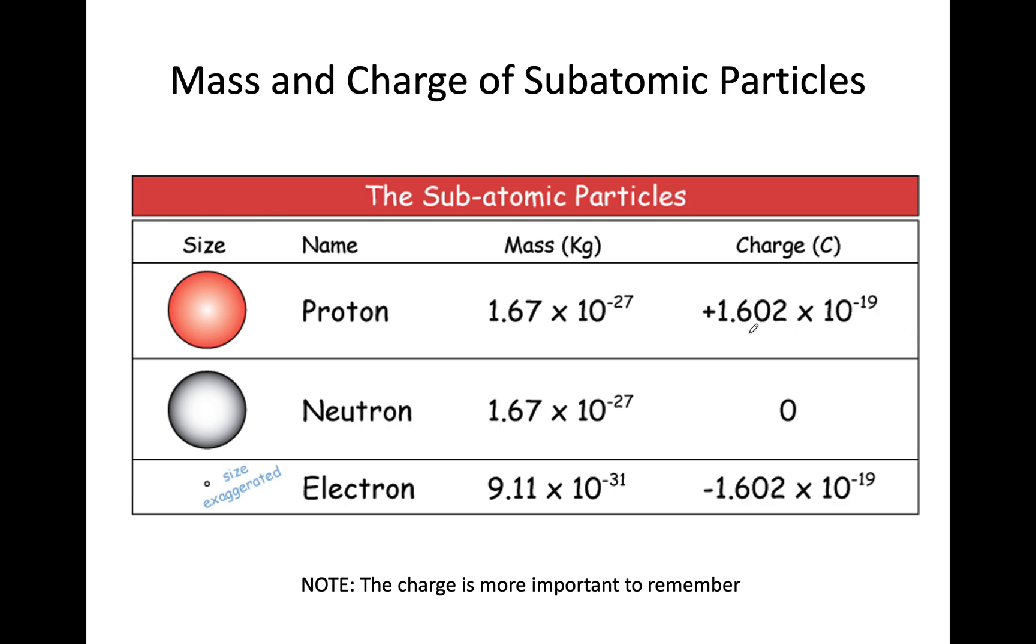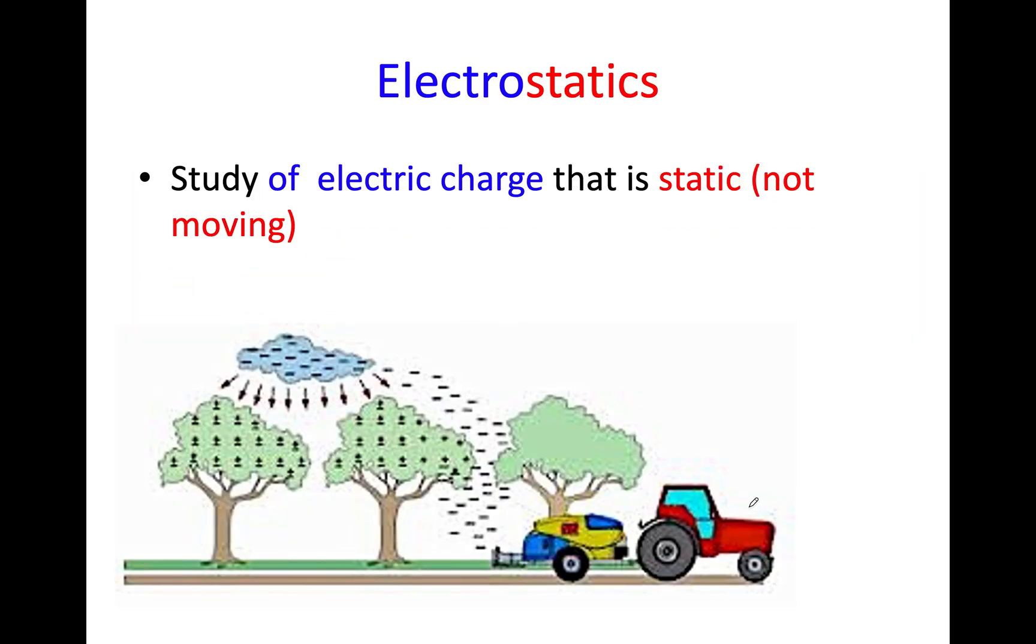But more importantly, it's the charge that we're more concerned about. 1.6 times 10 to the minus 19, positive for proton, negative for electron.